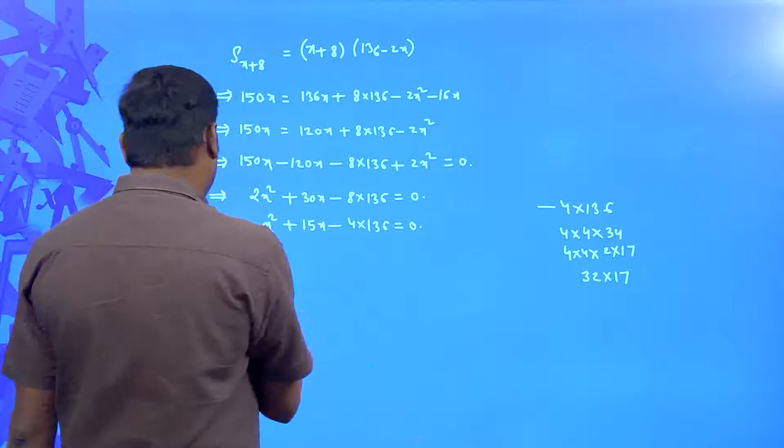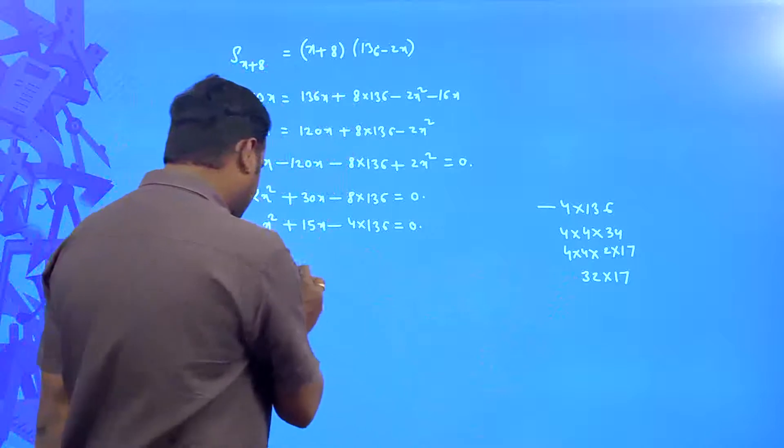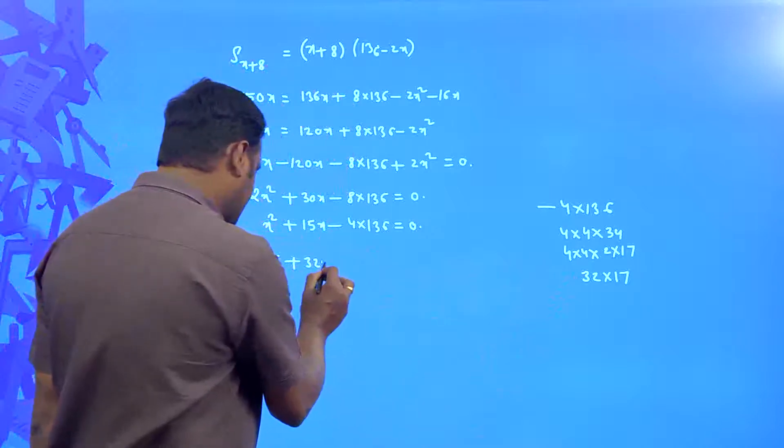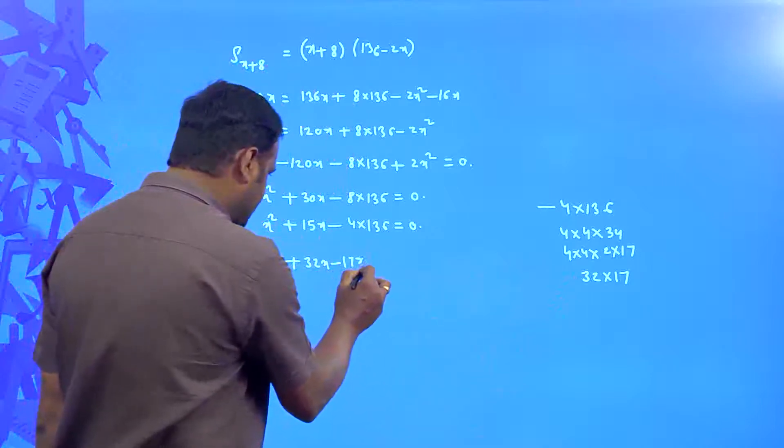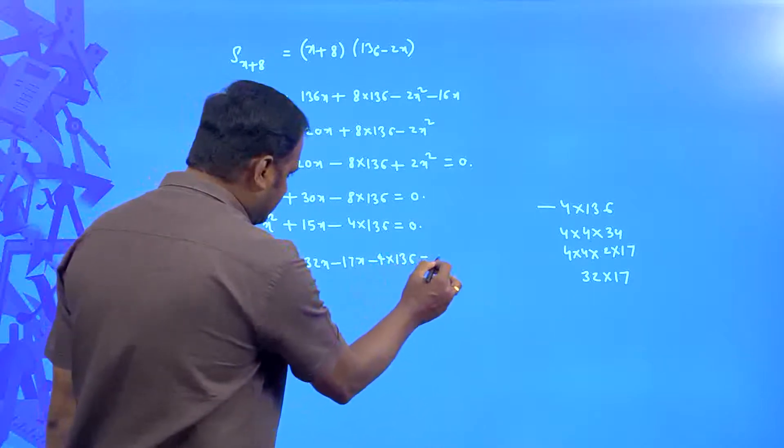That you can write it as x square plus 15x can be written as plus 32x minus 17x minus 4 into 136 is equal to 0.